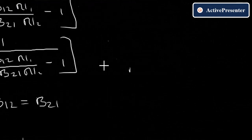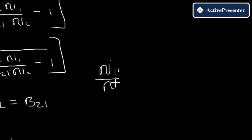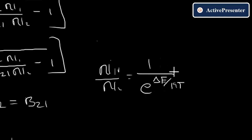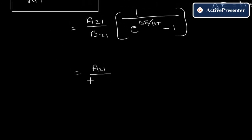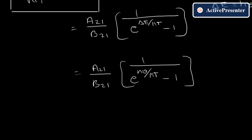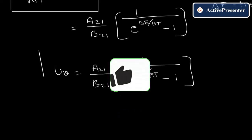Since N1/N2 = 1/(N2/N1) = e^(ΔE/kT), the expression in the bracket becomes e^(ΔE/kT) − 1. Substituting ΔE = hν, the equation becomes: u(ν) = (A21/B21) · 1/(e^(hν/kT) − 1).